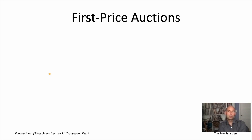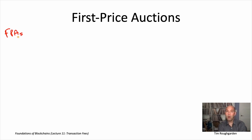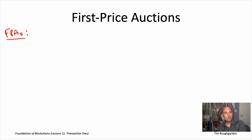In this video, let me introduce you to what's probably the most natural, reasonable solution to how to set transaction fees in a blockchain protocol — namely by having users submit bids in what's known as a first price auction. Nakamoto's original proposal for Bitcoin included first price auctions as a transaction fee mechanism. It's still used in Bitcoin to this day, and was also used by Ethereum until August 2021, when they switched to a new mechanism we'll talk about later.